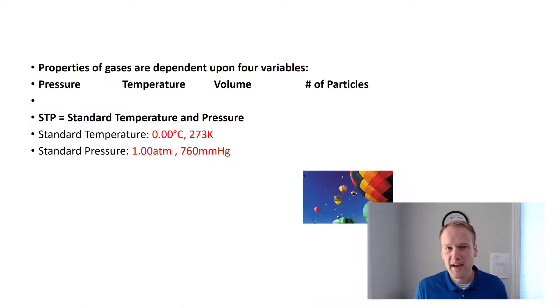Let's get started. The properties of gases are dependent on four things: pressure, temperature, volume, and the number of particles. Throughout this section, you might hear me refer to STP or at STP. What I'm saying is at standard temperature and pressure. Standard temperature is zero degrees Celsius, which is also 273 Kelvin. And standard pressure is one atmosphere, which is 760 millimeters of mercury. Anytime I would say at STP, you should assume that is the temperature and pressure I'm talking about.